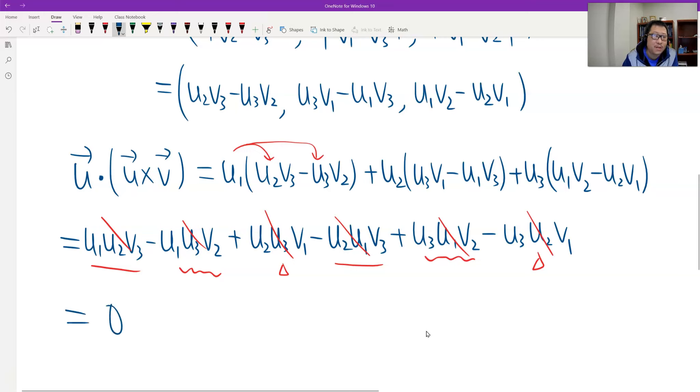So the answer is zero. Zero means what? Means the cross product is perpendicular or orthogonal to u. So that's the proof. Thank you.